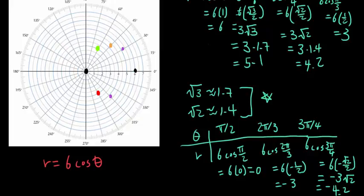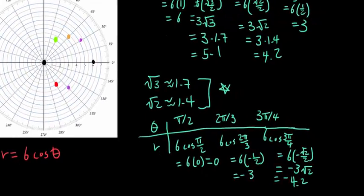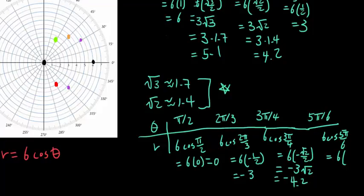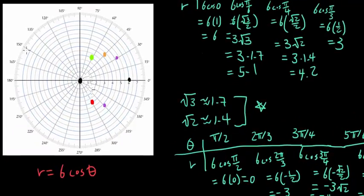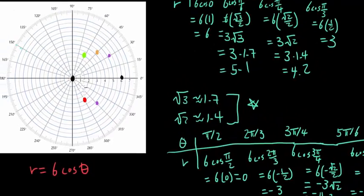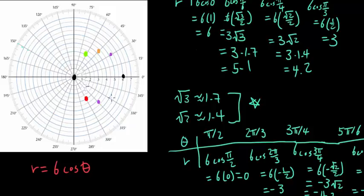Let's try 5 pi over 6. When you plug it in, you're going to get 6 times cosine of 5 pi over 6, which is 6 times negative square root of 3 over 2, or negative 3 times square root of 3, or about negative 5.1. So for 150 degrees, you're going to go about negative 5.1, and that's going to be right there.